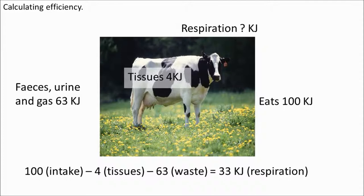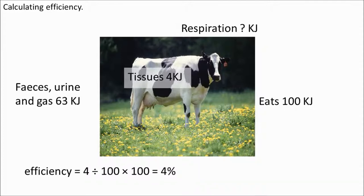Only 4 kilojoules are available to the next stage in the food chain — we're probably the next stage in that food chain for our burgers and steaks. The efficiency is the amount available to us, 4 kilojoules, divided by the total intake, 100 kilojoules. This gives us a decimal of 0.04, and to turn that into a percentage you multiply by 100. So that gives us 4% efficiency.